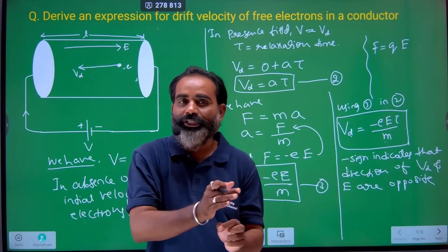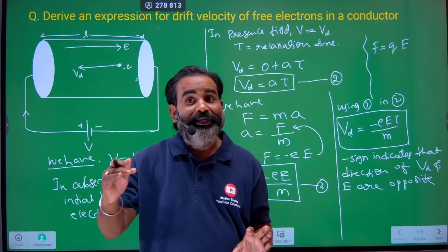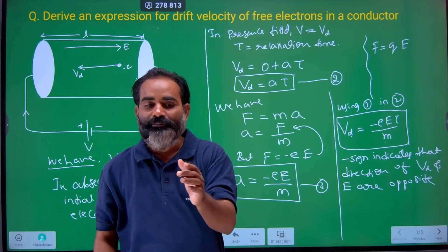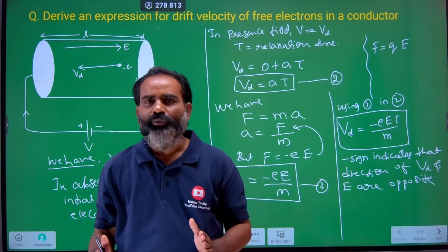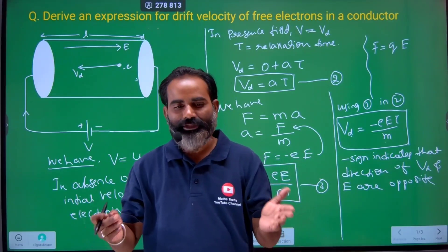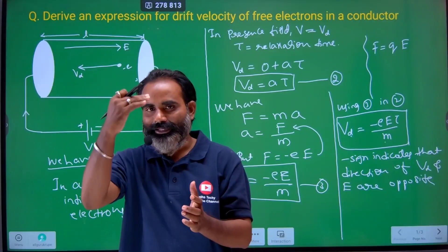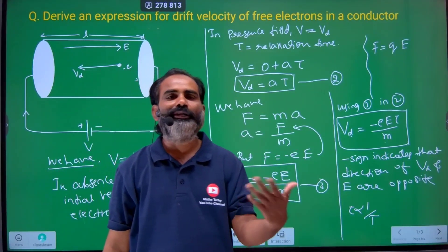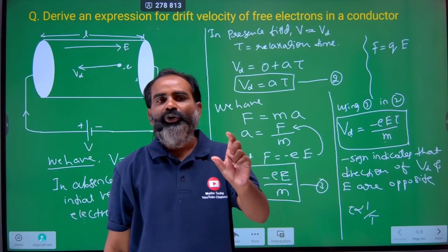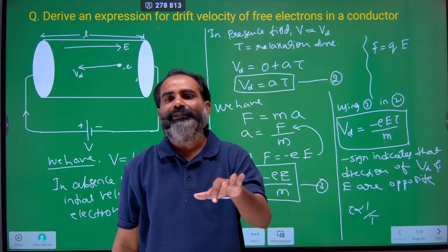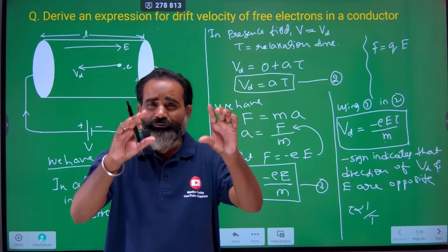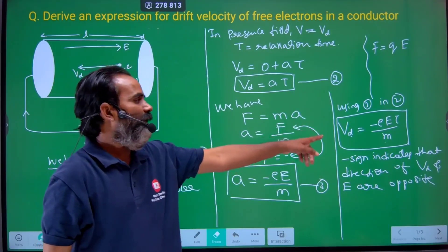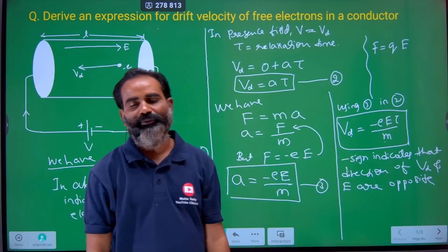So Vd depends on E (electric field). The charge e and mass m of the electron are constants. Vd also depends on tau (relaxation time), which is constant for a particular conductor at a given temperature. If temperature increases, tau decreases because collisions increase. We assume a fixed temperature and fixed conductor. Final result: Vd equals minus eE tau divided by m.